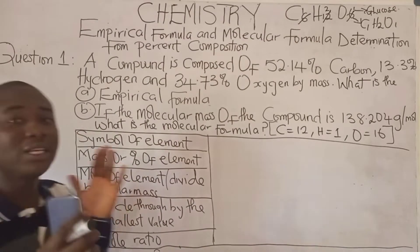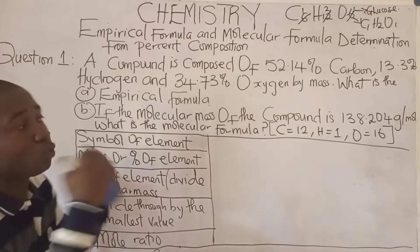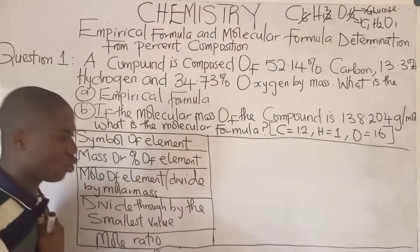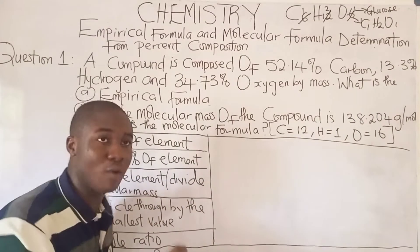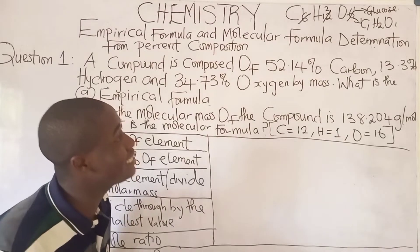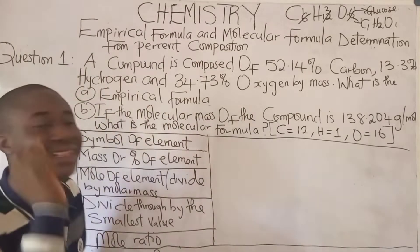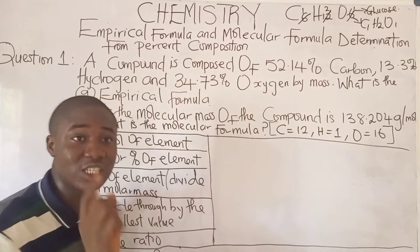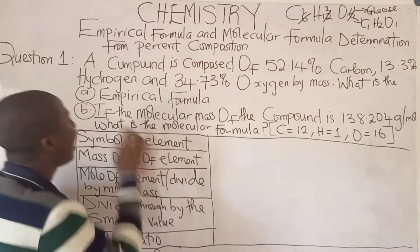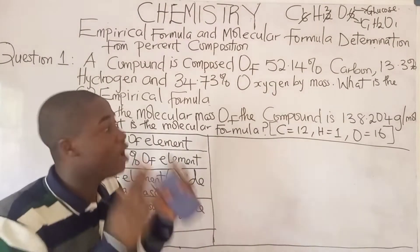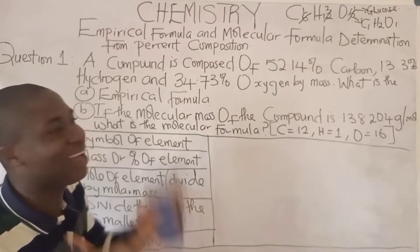The question requires us to calculate the empirical formula and the molecular formula of this compound. The question says: a compound is composed of 52.14% carbon, 13.3% hydrogen, and 34.73% oxygen by mass. What is the empirical formula of the compound? Also, if the molecular mass of the compound is 138.204 grams per mole, what is the molecular formula of the compound?